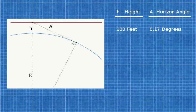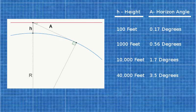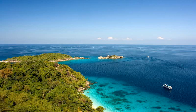At 100 feet high, the dip angle is only 0.17 degrees. At 1,000 feet, it is still only 0.56 degrees. At 10,000 feet, 1.7 degrees. And even at airliner altitudes of 40,000 feet, the angle is a mere 3.5 degrees. The angle is just way too small for you to accurately detect it without a precise measuring device, especially at the low elevations we normally experience. It is going to look close to eye level, but it is slightly below eye level at all times.